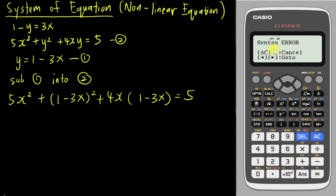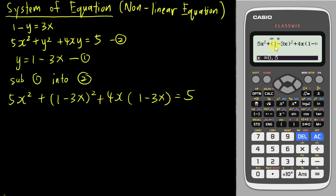After you type the whole equation, don't press the normal equal button or the calculator will show a syntax error. You need to tell the calculator you want to solve this quadratic equation, so press Shift then Solve. The calculator will then prompt you with an x= field. This is not your answer yet — it is asking what value you want your x answer to be near. I'll tell the calculator I want x nearer to 100.